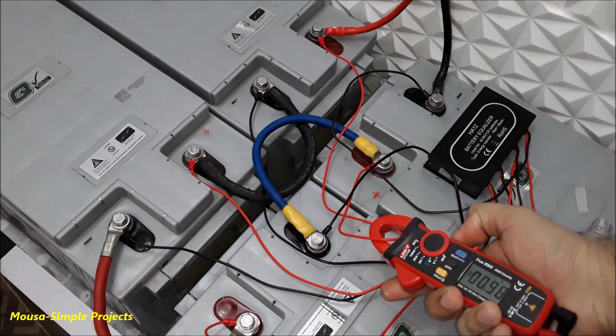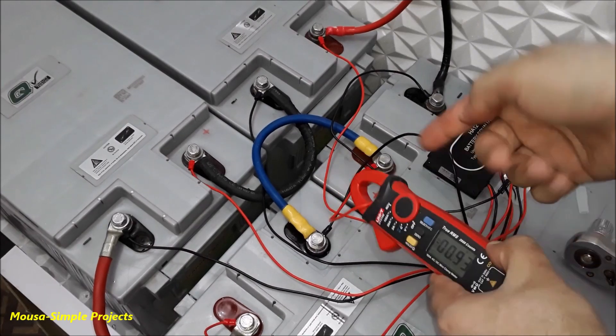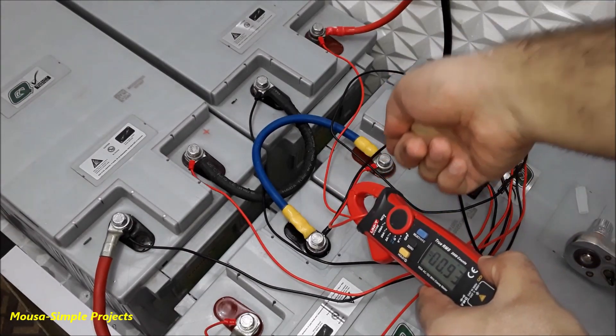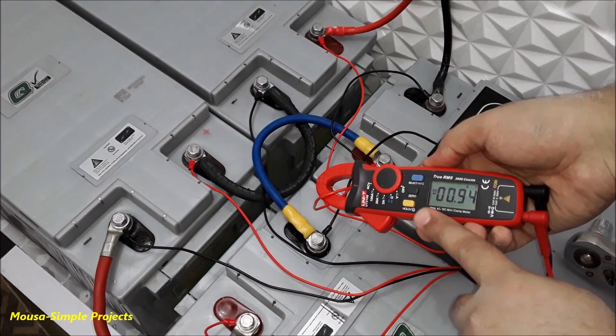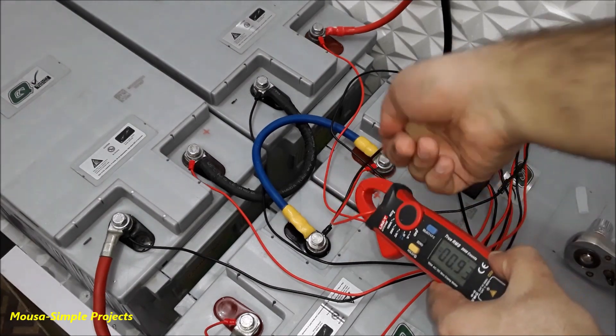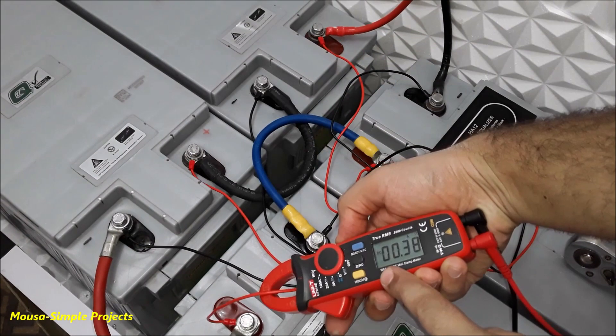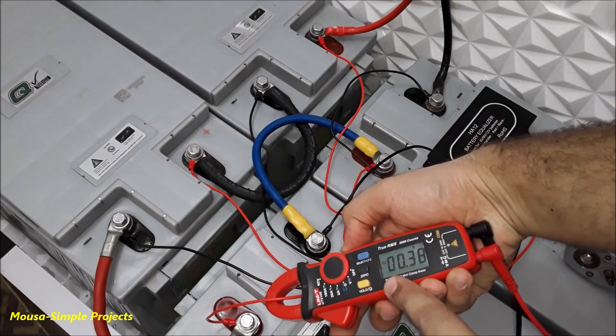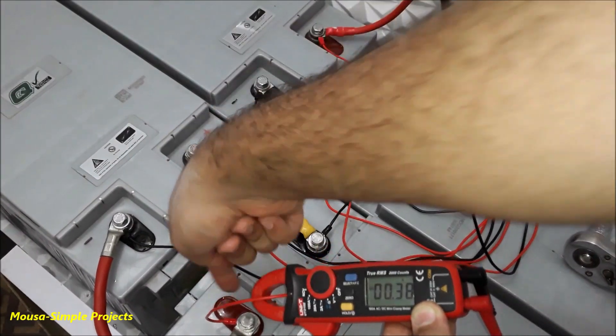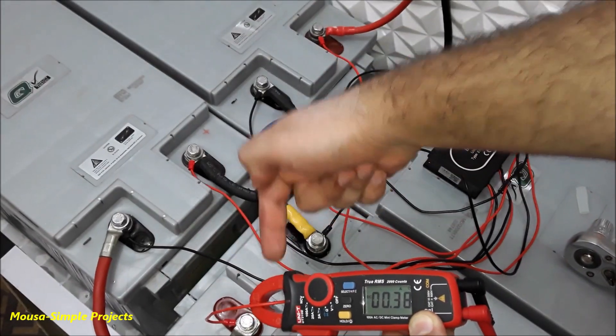As you can see here, this battery equalizer started to charge this battery that has lower voltage with a current of 1 amp. This minus here means that the current is flowing in this direction to the battery. The interesting thing here is that this 1 amp of current is coming from the other 3 batteries that have higher voltage.